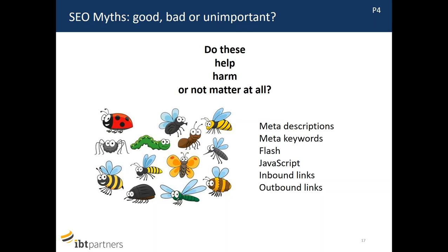Another area is meta keywords — a slightly outdated concept, especially for Google. Some people put a bunch of keywords into the HTML code; these are not visible to website visitors, they're just in the code. Google actually ignores them. You should be spending time doing something more effective. However, some other search engines like Baidu still might look at those meta keywords. So if you're targeting Google, you're good to ignore meta keywords; if it's a different search engine, review and optimize them accordingly.